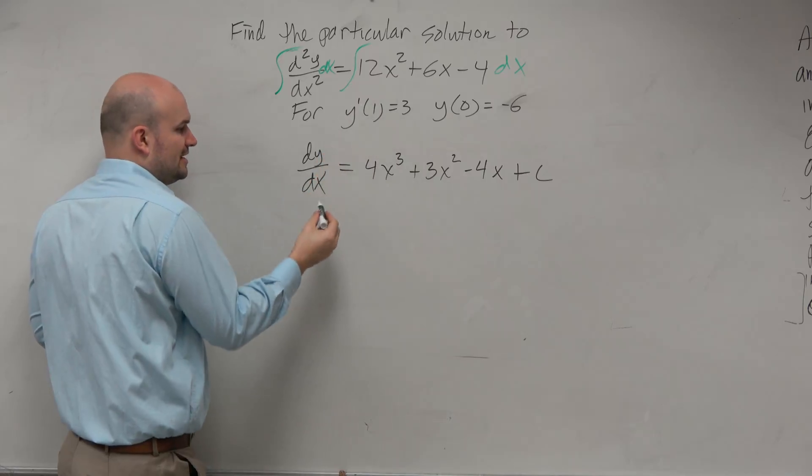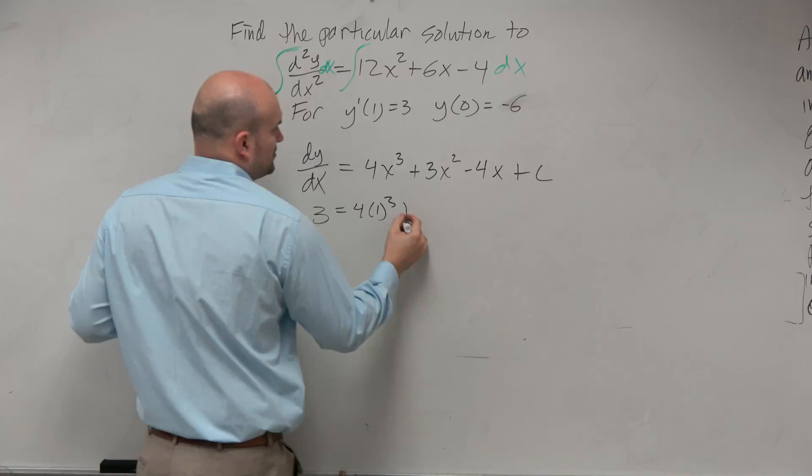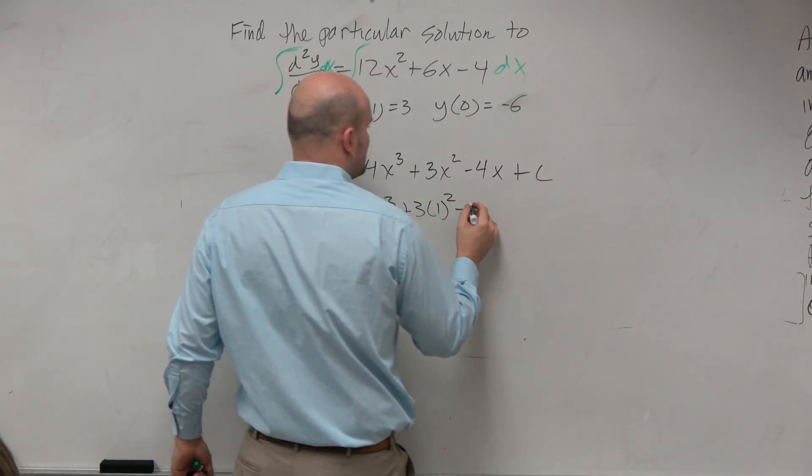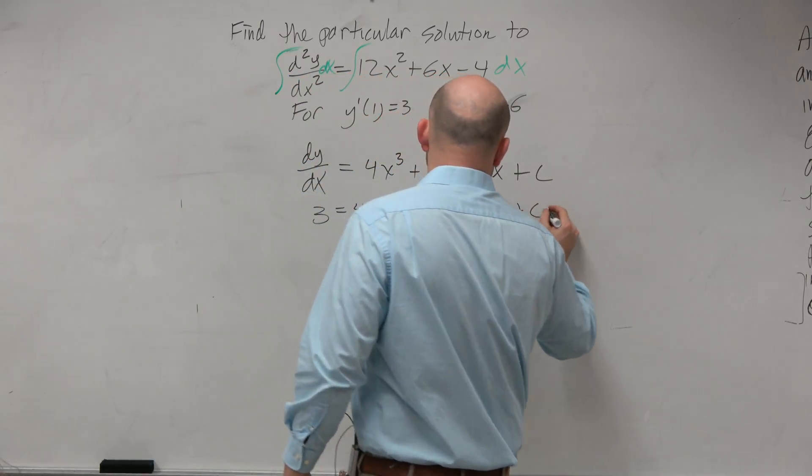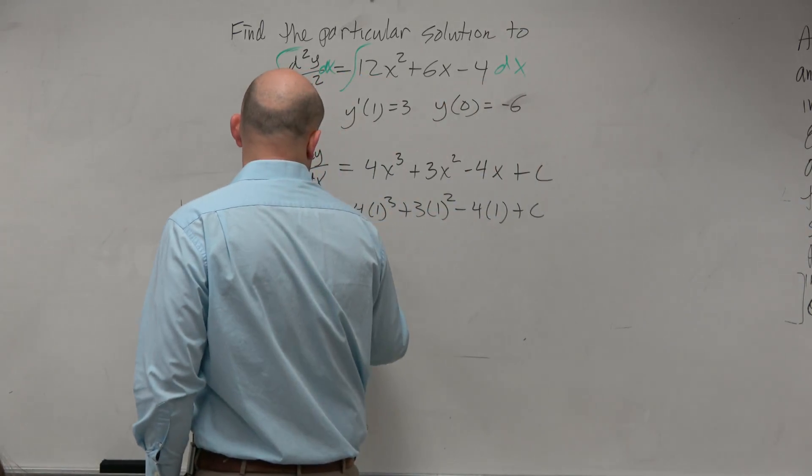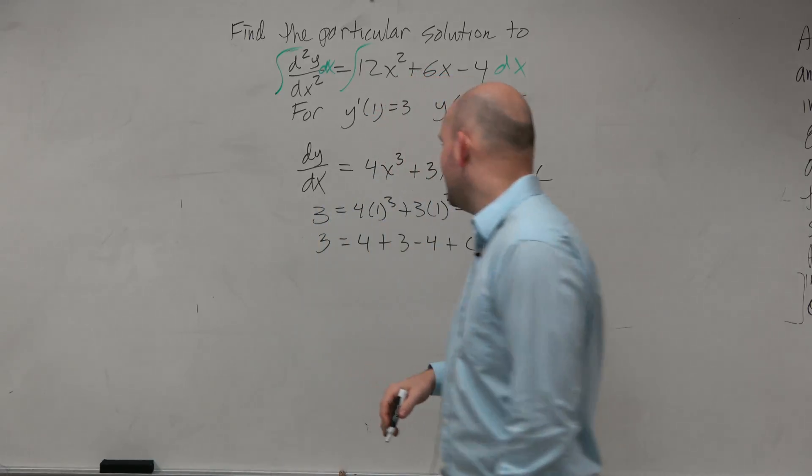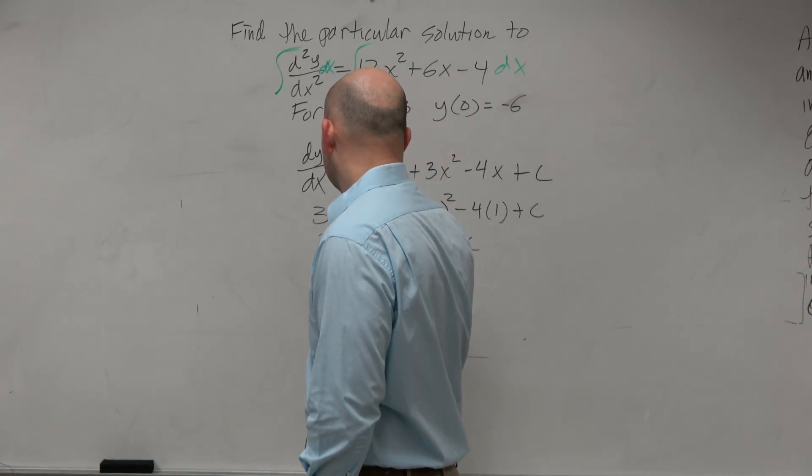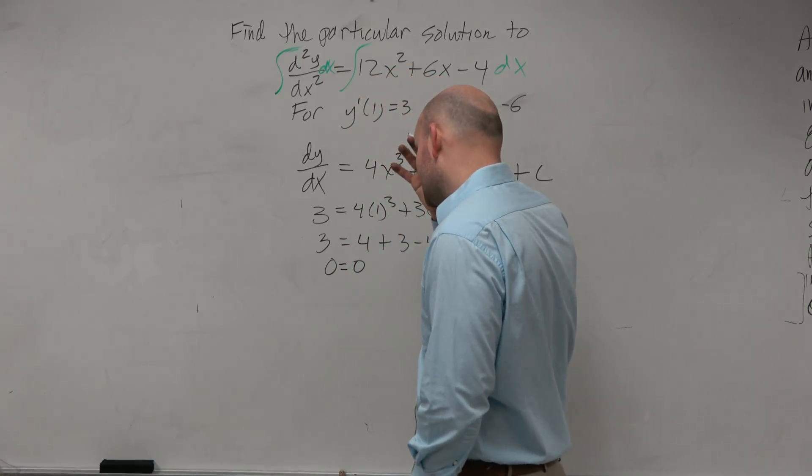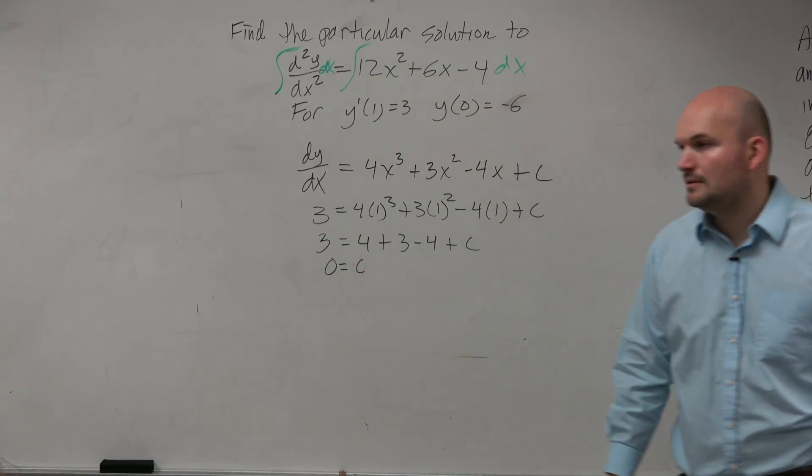where x equals 1 is 3. So I can say 3 equals 4 times 1³ plus 3 times 1² minus 4 times 1 plus c. And therefore, that gives me 3 equals 4 plus 3 minus 4 plus c. And c equals 0.